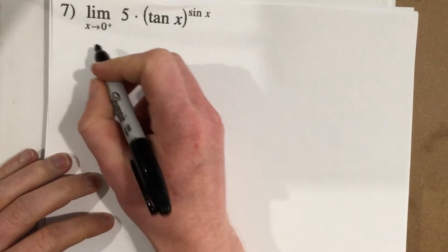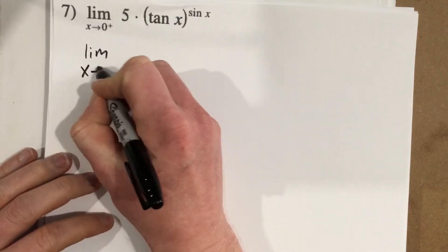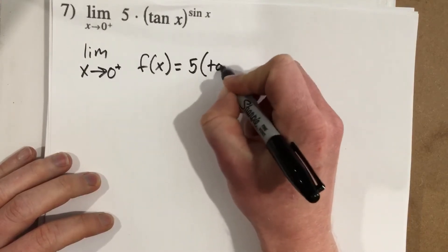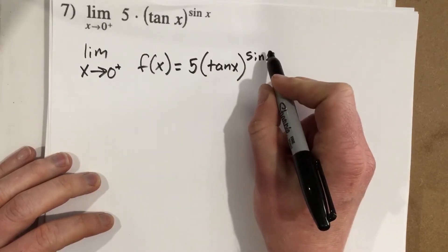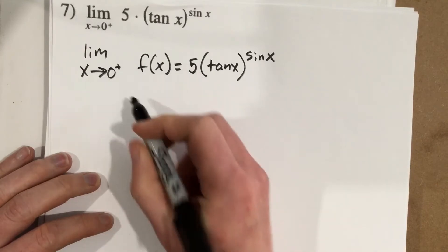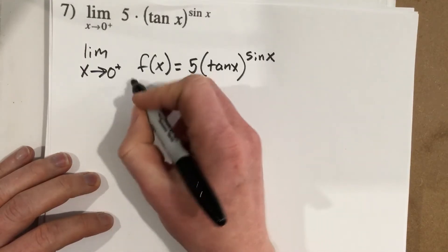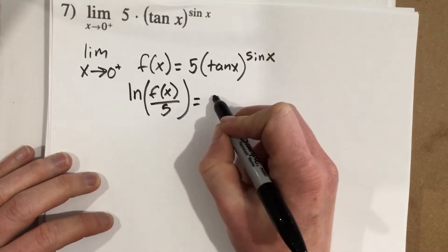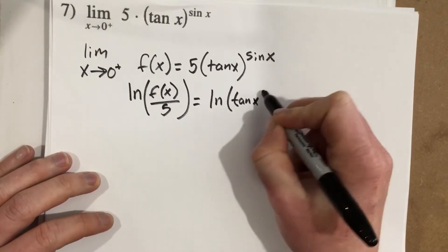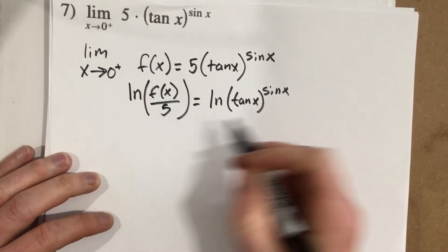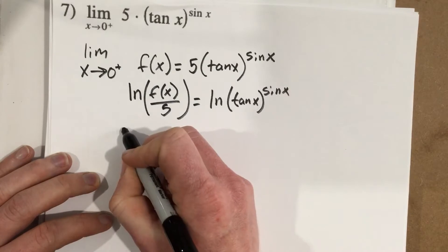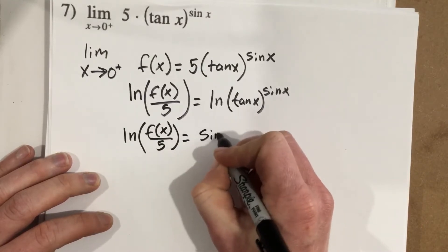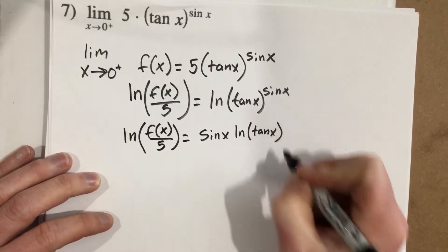Let's write this as the limit as x approaches zero from the right, where f(x) equals 5·tan(x)^sin(x). Because we have sin(x) in the exponent, we're going to take the natural log of each side. I'll divide by 5 first, so: natural log of f(x)/5 equals natural log of tan(x)^sin(x). We use log laws to bring sin(x) to the front: natural log of f(x)/5 equals sin(x)·ln(tan(x)).